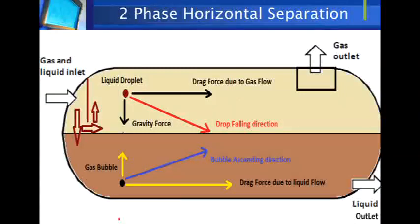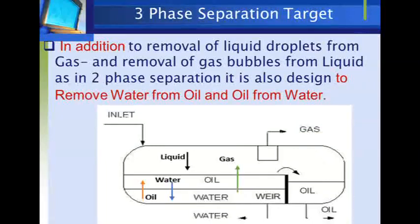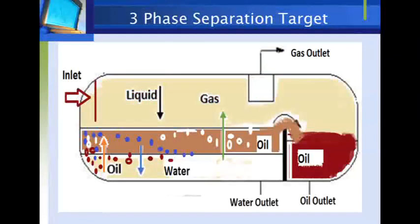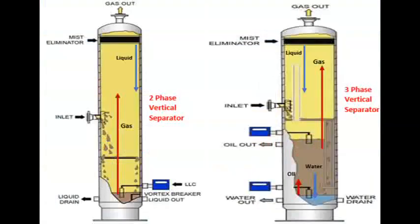For three-phase separation, in addition to removing liquid droplets from gas and gas bubbles from liquid as in two-phase separation, the separator is also designed to remove water from oil and oil from water. Removing liquid from the gas stream takes 5 to 15 seconds as in two-phase separation. Removing gas bubbles from liquid takes 1 to 4 minutes. The critical path is removing water from oil, which takes 20 to 30 minutes depending on oil viscosity and density, and the density difference between oil and water.